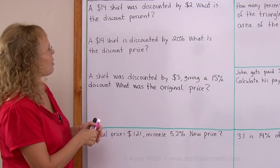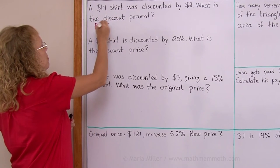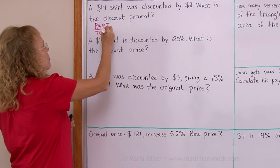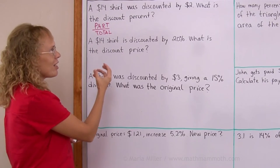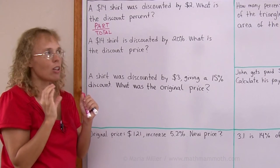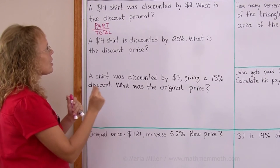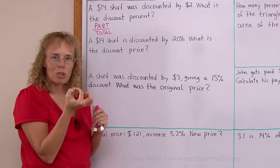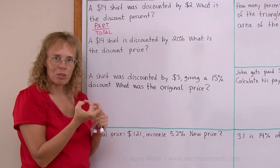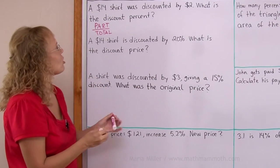So, thinking of that formula part over total, here I have that exact situation. I know the total price is $14 and part of that is $2. And what is the discount percent? The $2 is part of the $14 and 2 over 14 is the fraction that I need to change into a percent.